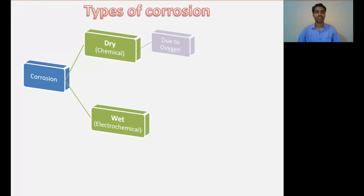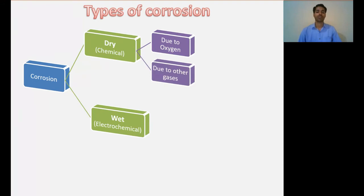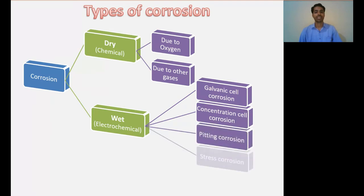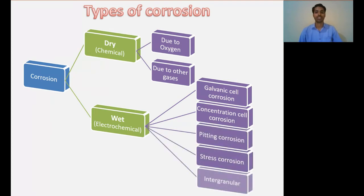Dry corrosion may be because of oxygen gas or because of other gases. Wet or electrochemical corrosion may be of five types: galvanic cell corrosion, concentration cell corrosion, pitting corrosion, stress corrosion, or intergranular corrosion.